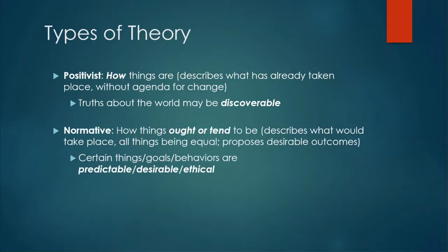A second type of theory is normative theory. These theories discuss how things ought to be, or tend to be, or should be. They help researchers describe what would take place, all things being equal, and propose desirable outcomes. The philosophy behind normative theories is that certain things, goals, or behaviors are predictable, or desirable, or ethical — in other words, some things are good or better than other things.